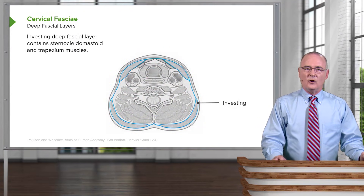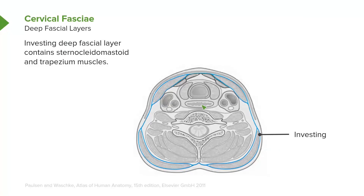The first is referred to as the investing deep fascia layer. This contains the sternocleidomastoid and trapezius muscles. We can see that this investing fascia is splitting and continuing on the deep surface of the trapezius as well as its superficial surface. In the posterior midline it joins to form one layer, and then as you go to the opposite side, that single layer divides again — one division going superficial and one going deep to the trapezius. Coming anteriorly, they join to form one investing layer, then separate around the sternocleidomastoid, forming a superficial lamina and a deep lamina.